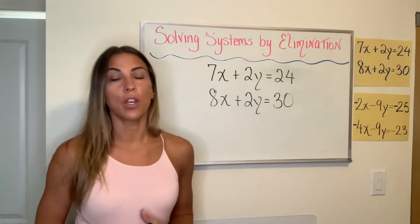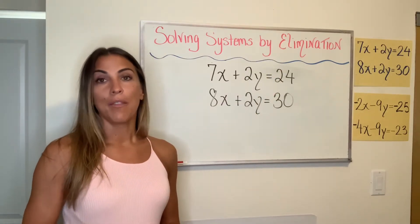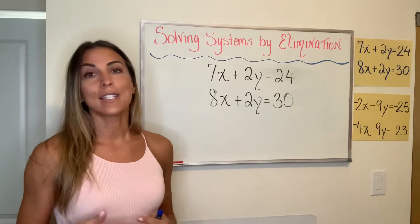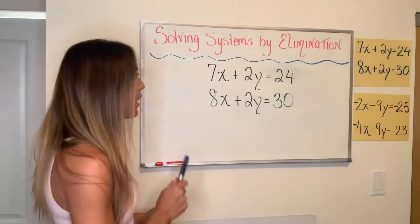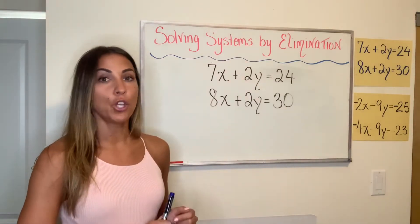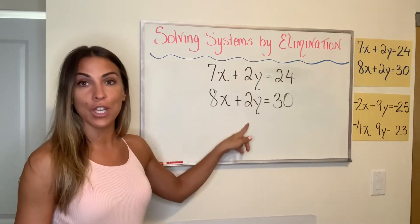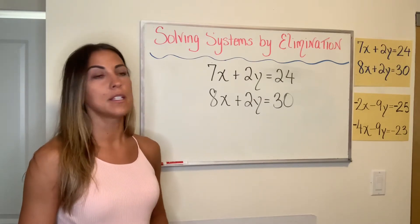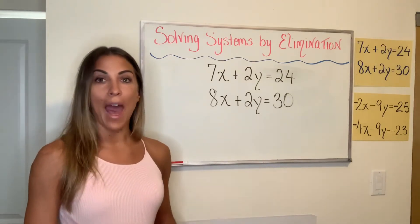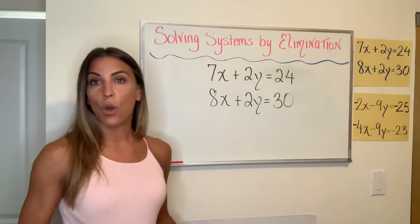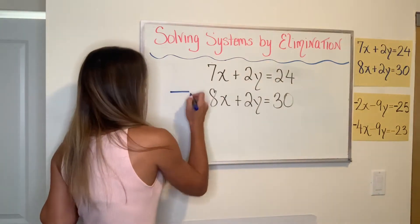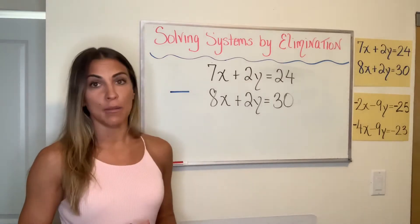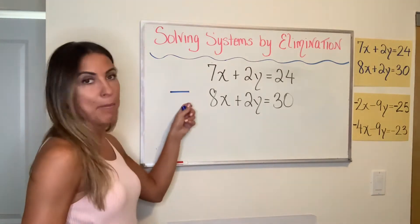So if you remember from the first video, I did tell you that elimination meant that you could add or subtract. So if you see a scenario in which you don't have opposite coefficients but you have the same coefficient, I'm going to show you two different ways. One thing you can do is instead of adding the equations together, let's go ahead and subtract them instead. The tricky thing here is you have to remember that everything is being subtracted. So always come back to that minus sign.